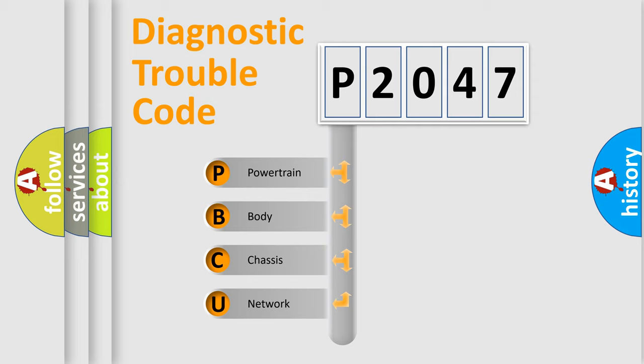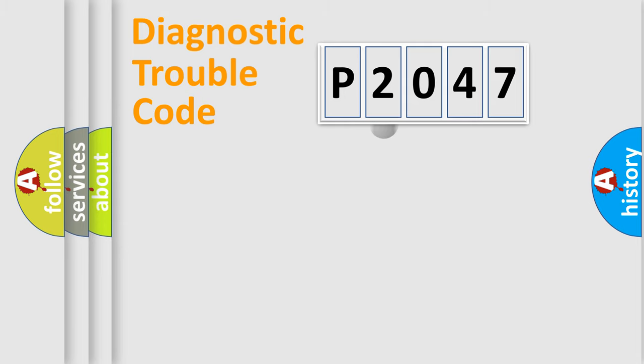We divide the electric system of automobile into four basic units: Powertrain, Body, Chassis, and Network. This distribution is defined in the first character code.